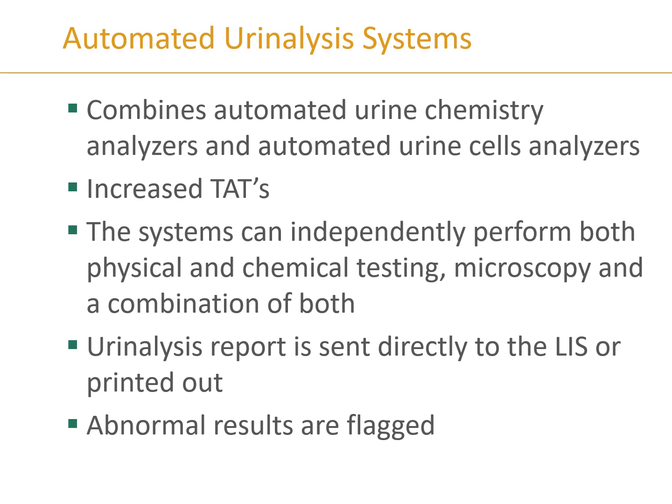Automated chemistry analyzers combine the automation of urine chemistry analyzers with the automation of urine cell analyzers into one system. This increases turnaround time because you are not dipping, spinning, and looking at samples separately — it runs everything at once, performing physical examination, chemical examination, and microscopy together. Reports can be printed or transmitted via LIS, and anything abnormal is flagged.